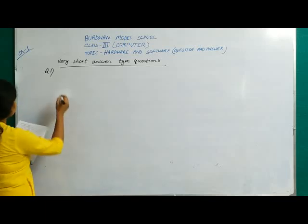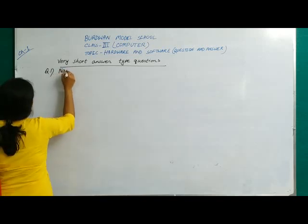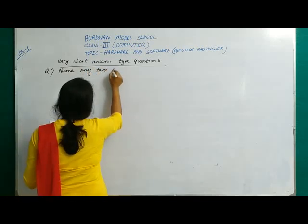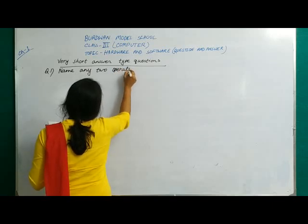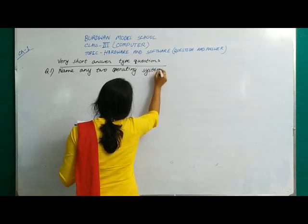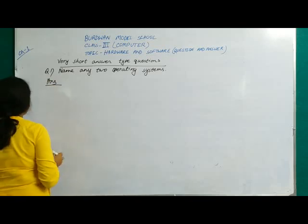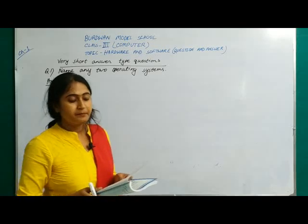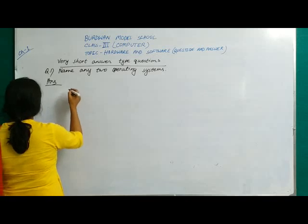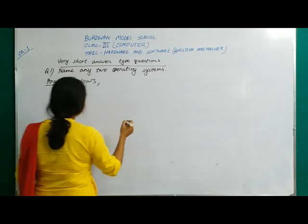Question number 1: Name any 2 operating systems. Windows is an operating system. Mac OS, Linux, Unix — these are all examples of operating systems. Write any 2: Windows and Linux.